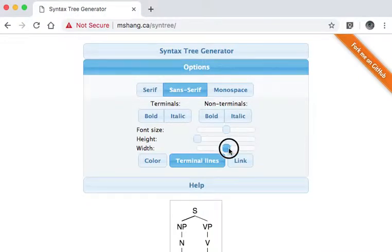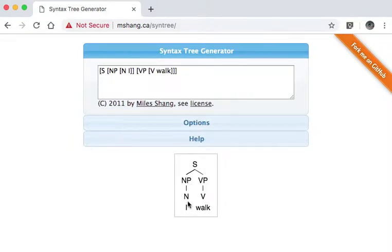Right, you can choose that terminal lines, just means there is or is not a line between the final word category and the word itself.